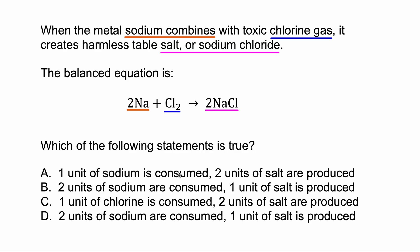One unit of sodium is consumed — let's pause here. The unit is always the number in front. Sodium is the first thing, and there are actually two units because that's the number in front. So the first answer choice is not true. However, two units of salt are produced, because the thing at the end is salt and it's got the number two in front — so that is two units.